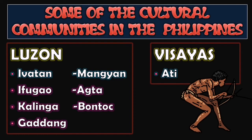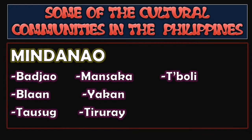Here are some of the cultural communities in the Philippines. In Luzon, we have the Ivatan, Ifugao, Kalinga, Gadang, Mangyan, Agda, and Bontoc. In Visayas, we have the Ati tribe. In Mindanao, we have the Bajau, Blaan, Tausug, Mansaka, Tirurai, T'boli, and Yakan.